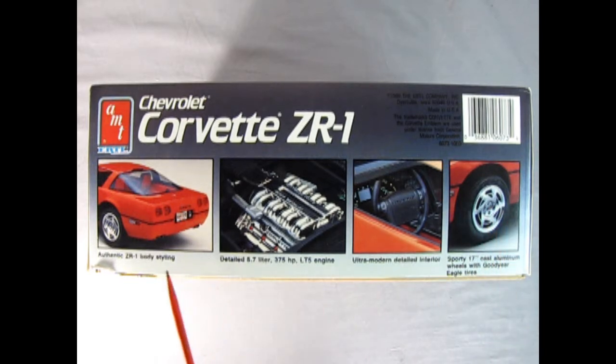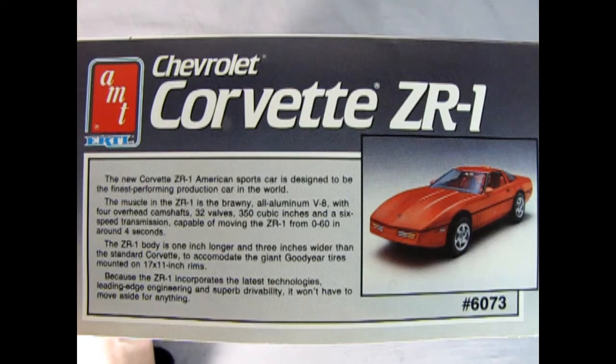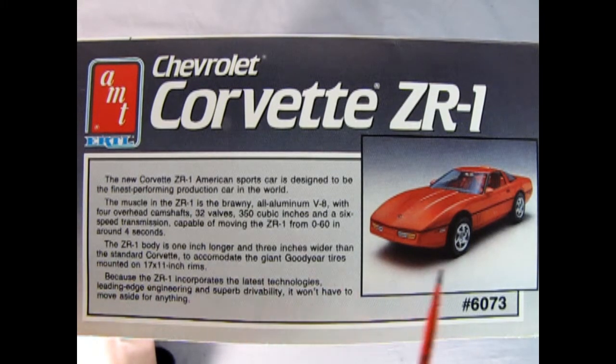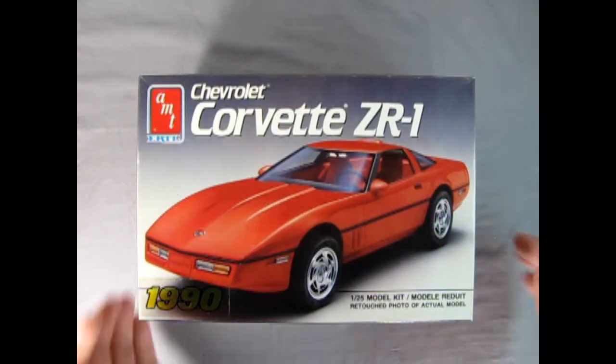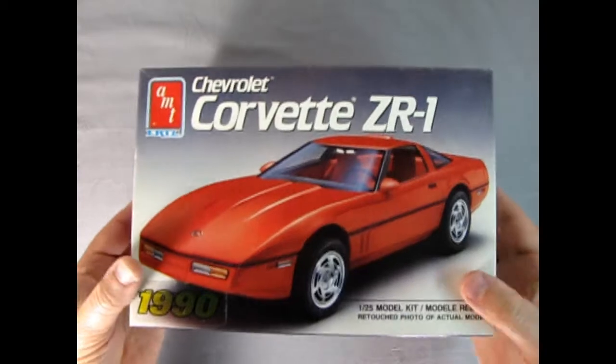The other thing he was saying is the ZR1s in this year were the only ones with these square or rectangular shaped tail lights in the back. There's even a history of the Corvette on the end of the box which is quite unique for these model car kits. So that's enough teasing of the box. Let's open this thing up and see what's inside.